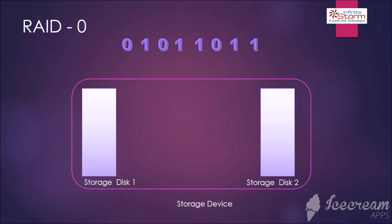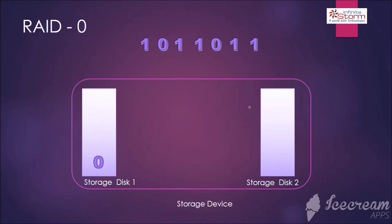To perform RAID 0, we require 2 disk drives. As shown here, the 8 bits of data are stored in disk 1 and disk 2 alternatively. As you can see in the simulation, the data is stored alternatively.